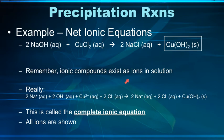Since the ionic compounds are existing as ions in solution, really what we can do is break all of these things apart. So sodium ion, hydroxide ions, copper ions, copper 2 ions, chloride ions. And we get sodium ions, chloride ions.